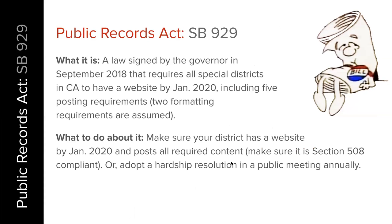SB99 is the recent bill that requires all special districts to have a website by January 2020. You can adopt a hardship resolution at a meeting annually if you have no staff, no internet access, or very little money — though that last reason isn't great because our platform is very affordable. If you aren't going to adopt a hardship, it's good to understand what you need to post to your website. Many people claim they want to claim a hardship because they think this will be so hard, but hopefully after this video you'll realize it's not.